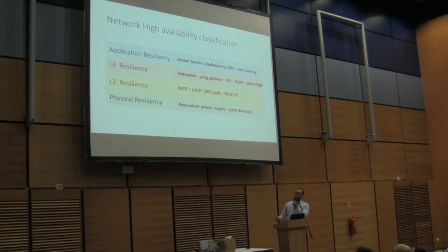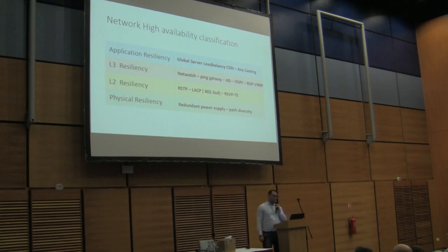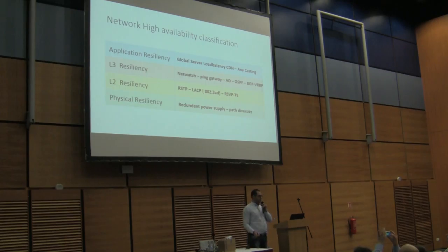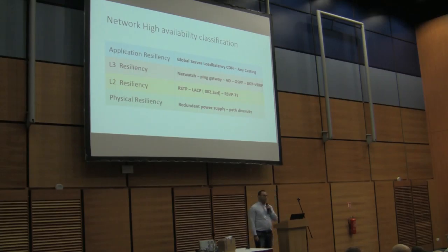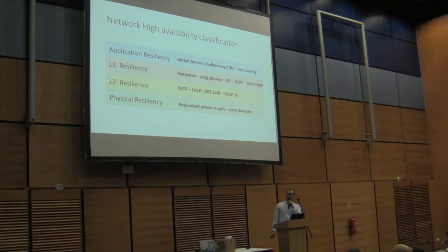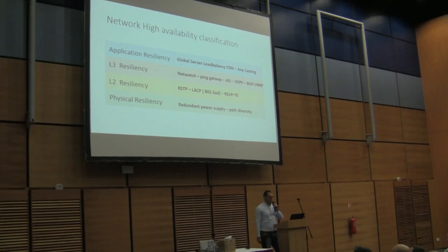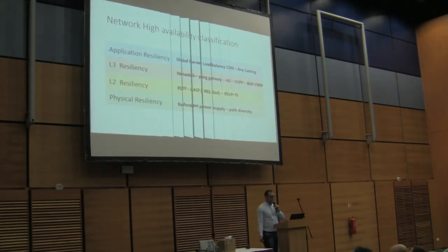For the network, we have about four layers for high availability. There is one for physical resiliency — for example, a device equipped with two different power supplies and path diversity. For Layer 2, the most common are RSTP, link aggregation protocols, and new technologies like reverse path or tunnel engineering. For Layer 3, there are static and dynamic tools like OSPF, BGP, or VRRP. For the application layer, it's global load balancing, CDN, or anycasting.